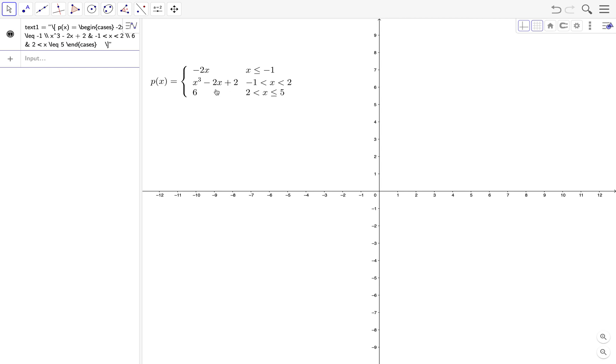For the first function we have negative 2x, so we type f of x equals negative 2x and then comma, and then we specify the domain inside the parentheses. So x is less than and then equal to negative 1.